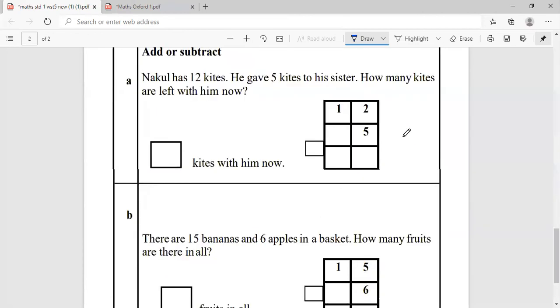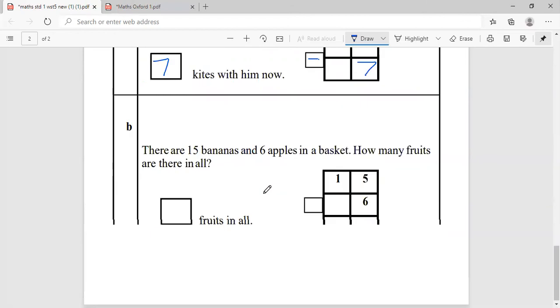Add or subtract. Nakul has 12 kites. He gave five to his sister. Gave, minus. How many kites are left? Left with him now. 12 minus 5. Count forward to subtract. Six, seven, eight, nine, ten, eleven, twelve. Answer is seven. So, seven kites with him now. Please do the remainder of it.